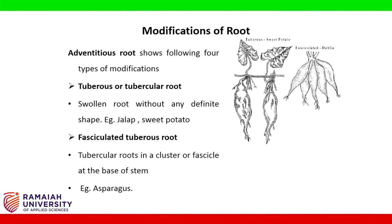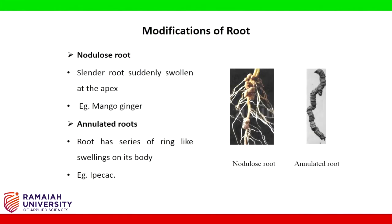Adventitious root shows the following types of modifications. Tuberous or tubercular root: swollen root without any definite shape. Example: jalap, sweet potato. Fasciculated tuberous root: tuberous roots in a cluster or fascicle at the base of the stem. Example: Asparagus. Nodulose root: slender root suddenly swollen at the apex.